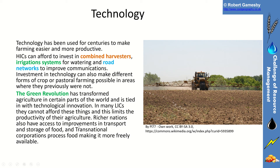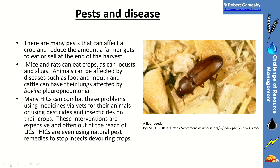Richer nations also have access to improvements in transport and storage of food. Transnational corporations process food, making it more freely available through things like farm to fork and vacuum packing.